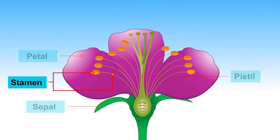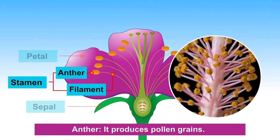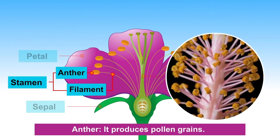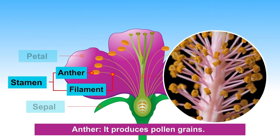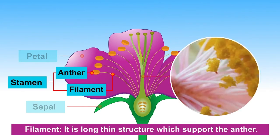Stamen is the male part of the flower. It consists of two parts: anther and filament. The anther produces pollen grains. The filament is a long thin structure which supports the anther.